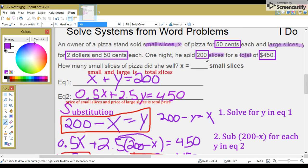Your answer was 25 small slices. So, 25 small slices were sold. If you were to get the large slices, you would just plug it in the first equation and solve for Y. Basically, 200 minus 25.